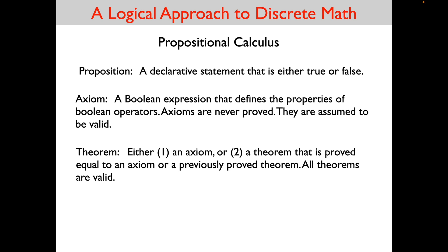One way to prove a boolean expression is valid is to write out the truth table. You could tediously prove all axioms and theorems by calculating the boolean expression in all possible states — but that provides no insight into the structure of the system. From now on, truth tables are out. Instead, we will use a set of axioms and our four inference rules: substitution, Leibniz, equanimity, and transitivity. You can review those in a previous recap.